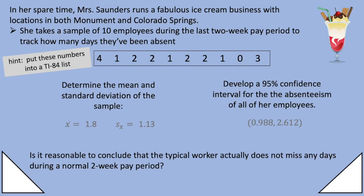Now the question was, is it reasonable to conclude that the typical worker actually does not miss any days during a normal two week pay period? So the confidence interval is telling you what's reasonable. Are zero days reasonable? Zero is not in the interval. So zero is not reasonable. The typical worker likely misses between one and two days per pay period. So I think it's reasonable that she's getting mad.